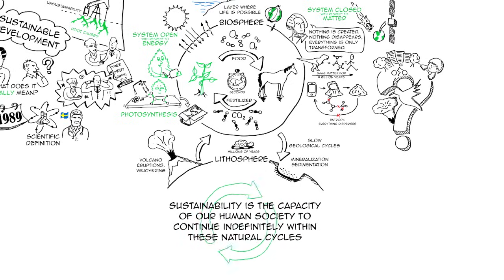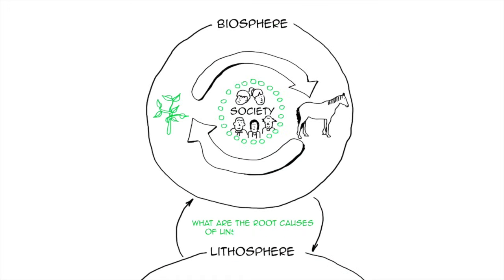So you may be thinking, well, this does not exactly tell us what to do on Monday morning either. That's right, but it made it possible for our group of scientists to look at the things that we do to interfere with these natural cycles. And they found four root causes of unsustainability. And these are the four things that we need to stop doing to be sustainable. They're all equally important. They're all necessary and sufficient.